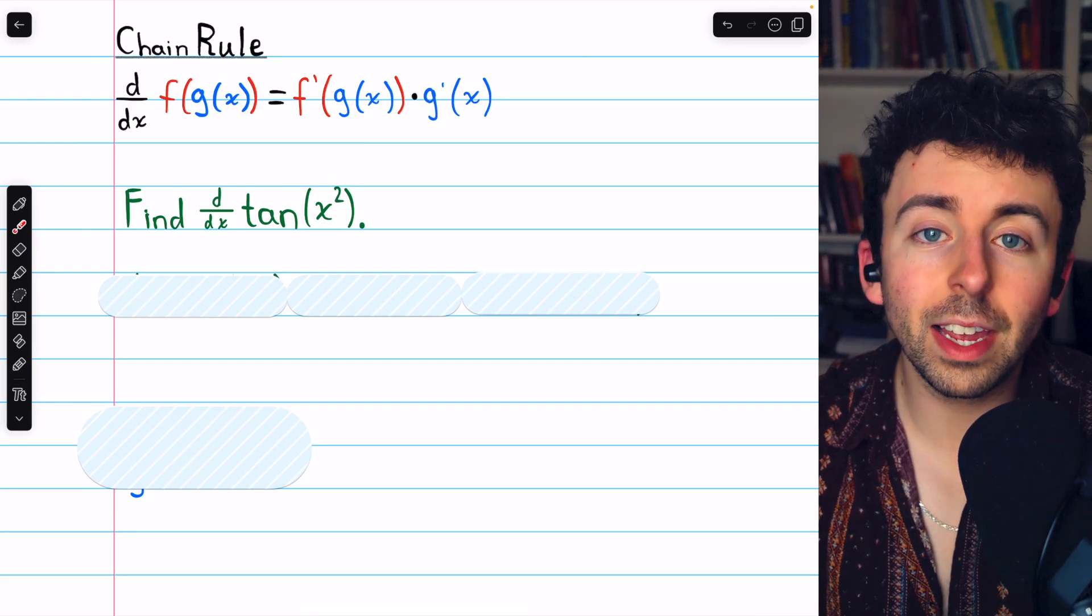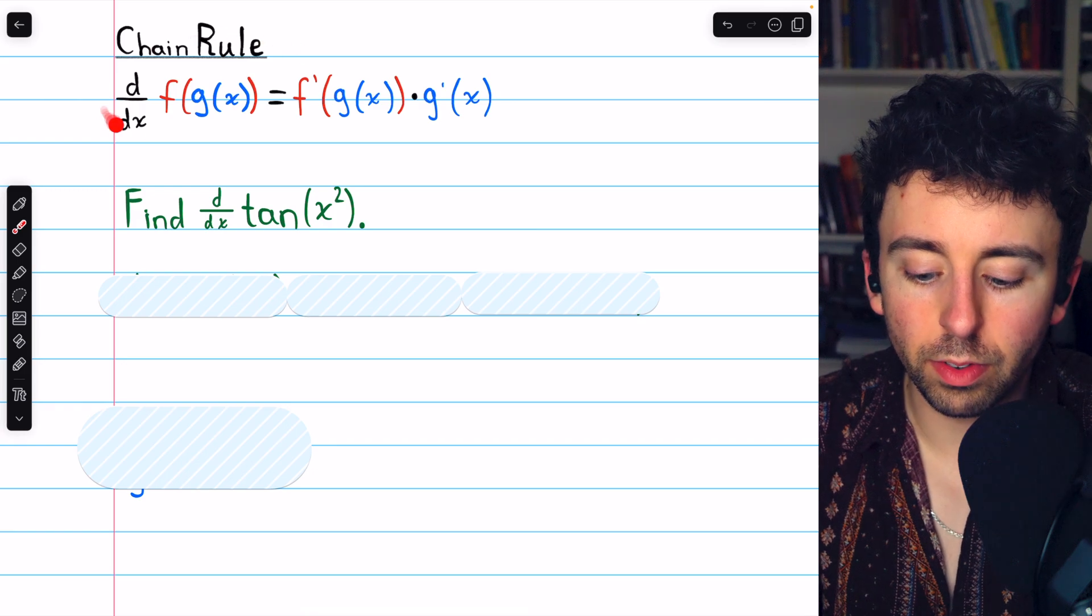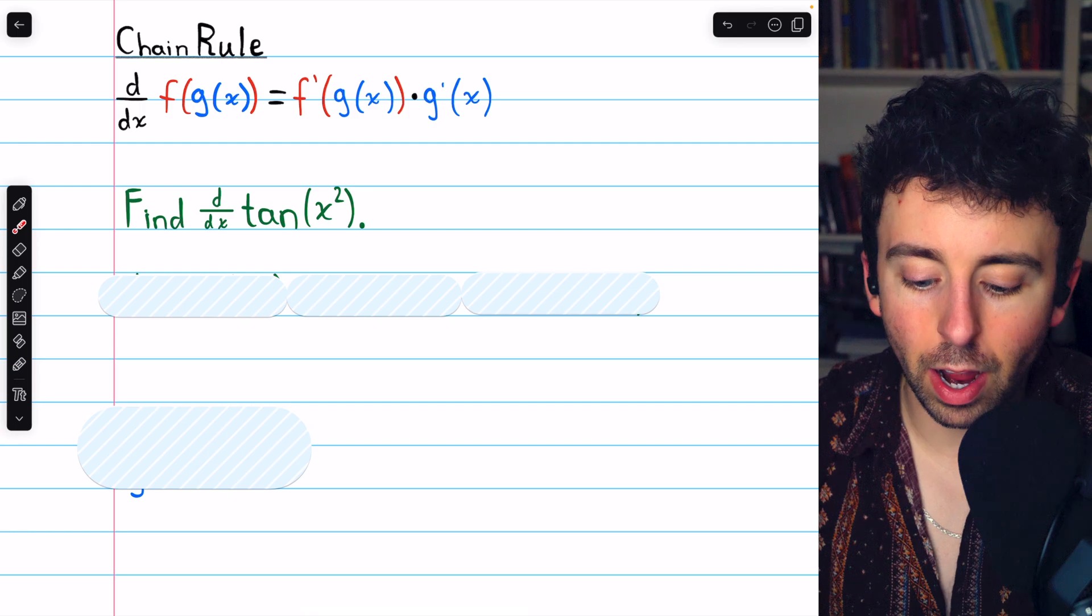Tangent of x squared is a composite function, so to take its derivative we need to use the chain rule, which I've written here for your reference: f prime of g times g prime.